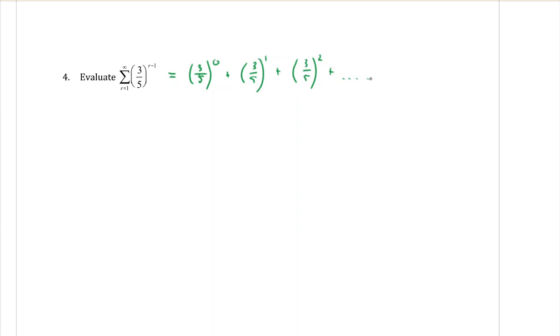But now hopefully we can see what our first term is. Three over five to the power of zero is just going to be equal to one. The second term would be three fifths. And the third term is nine over twenty five, squaring the top and squaring the bottom. So I just needed that A was one and I need R, which is three fifths.